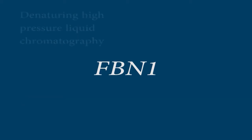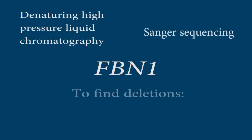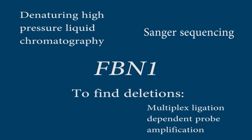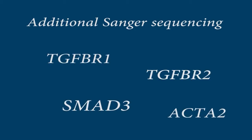First, denaturing pressure liquid chromatography was used to identify the disease-causing mutation in the fibrillin 1 gene, but none was found. Without any result, other diagnostic tests were performed, including Sanger sequencing, multiplexed ligation-dependent probe amplification and CNV analysis. Additional Sanger sequencing of other known aneurysm genes, like TGF-beta receptor 1 and 2, SMAD3 and ACTA2, could also not explain the phenotype in the family.